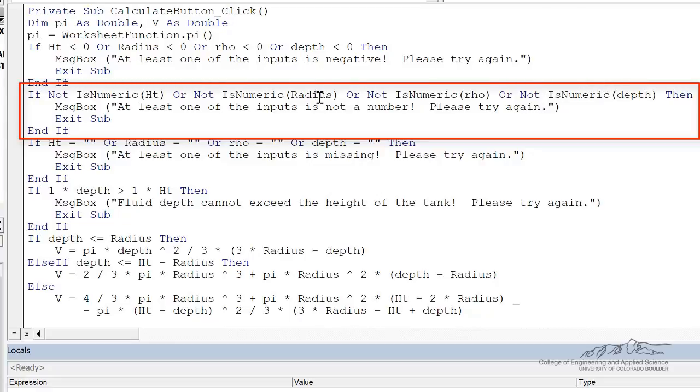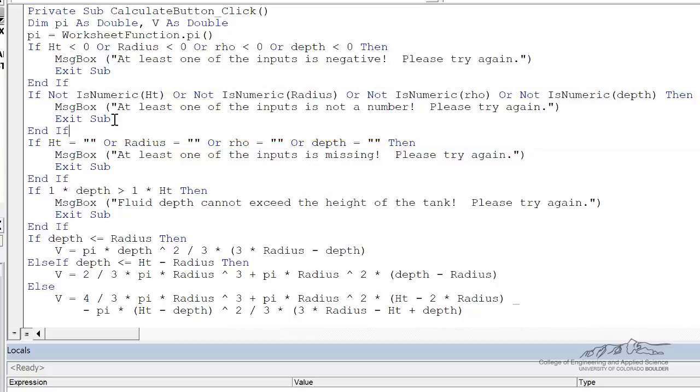then what we're going to have, for example, if the radius is a string, isNumeric of a string is false, but we're taking not of that, so not false is true. So if any of these is not a number, then we'll have a true, and we'll trigger this error message, and then we're going to exit the sub. So this is a good way to check to make sure that the inputs are numeric.